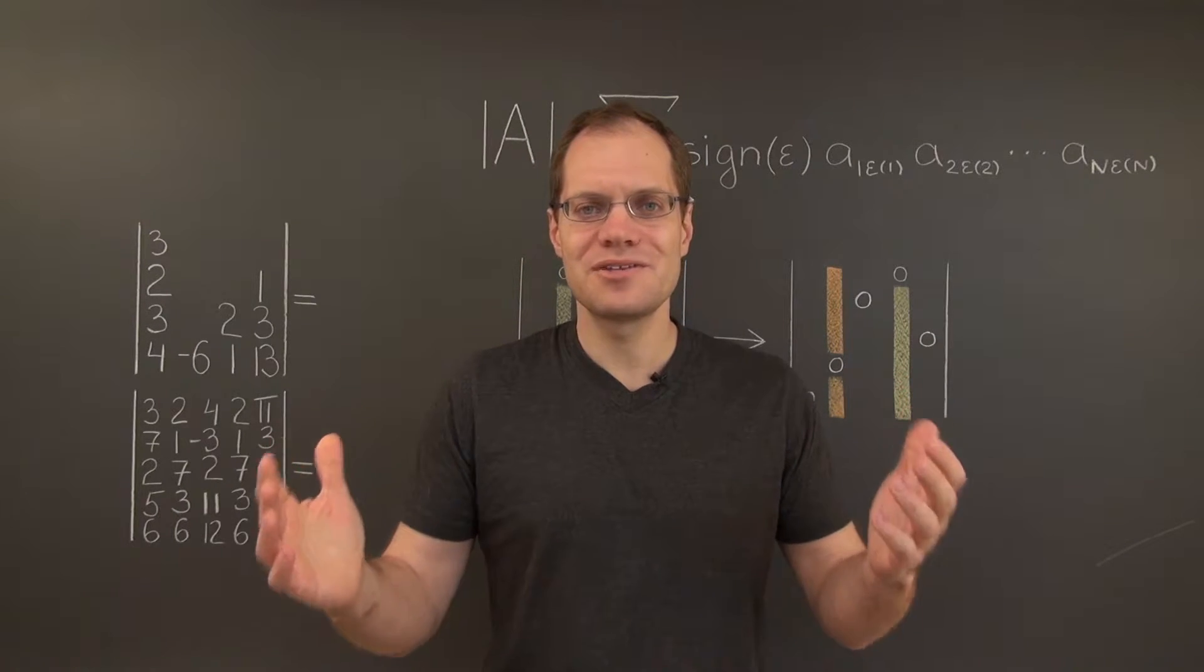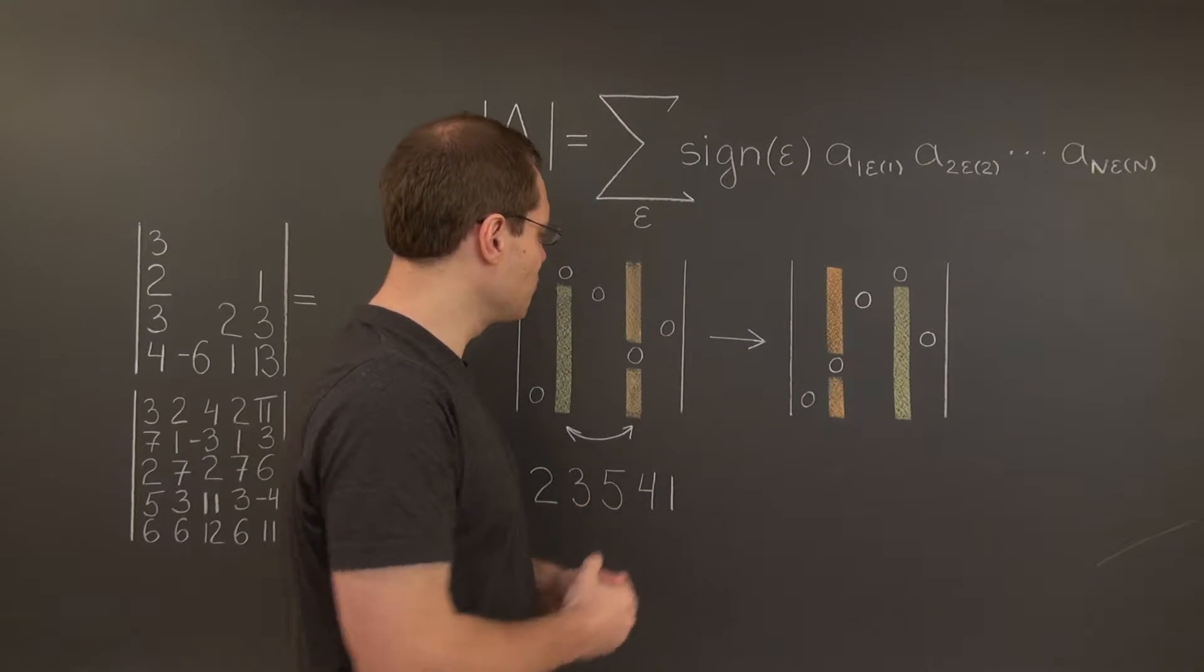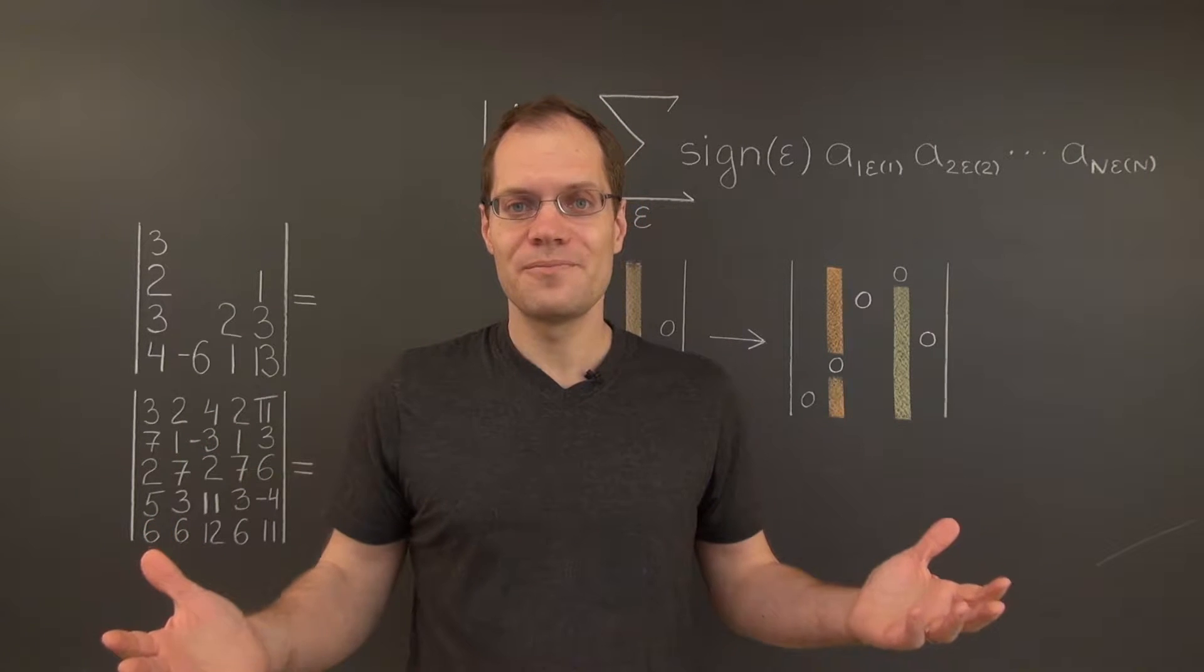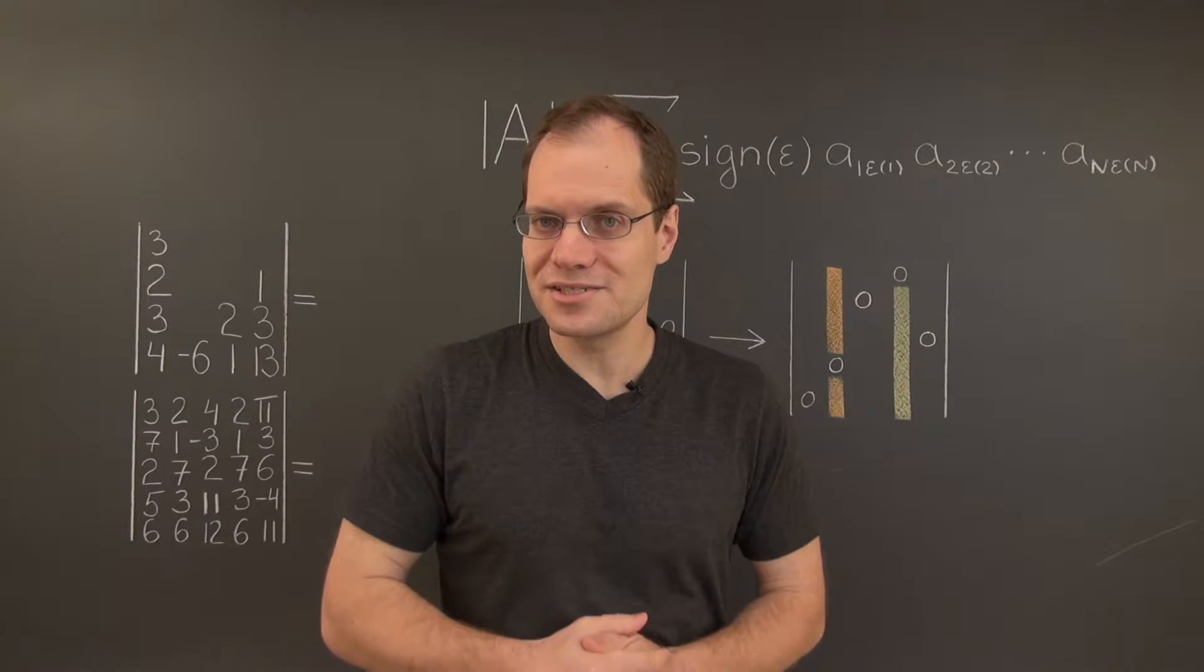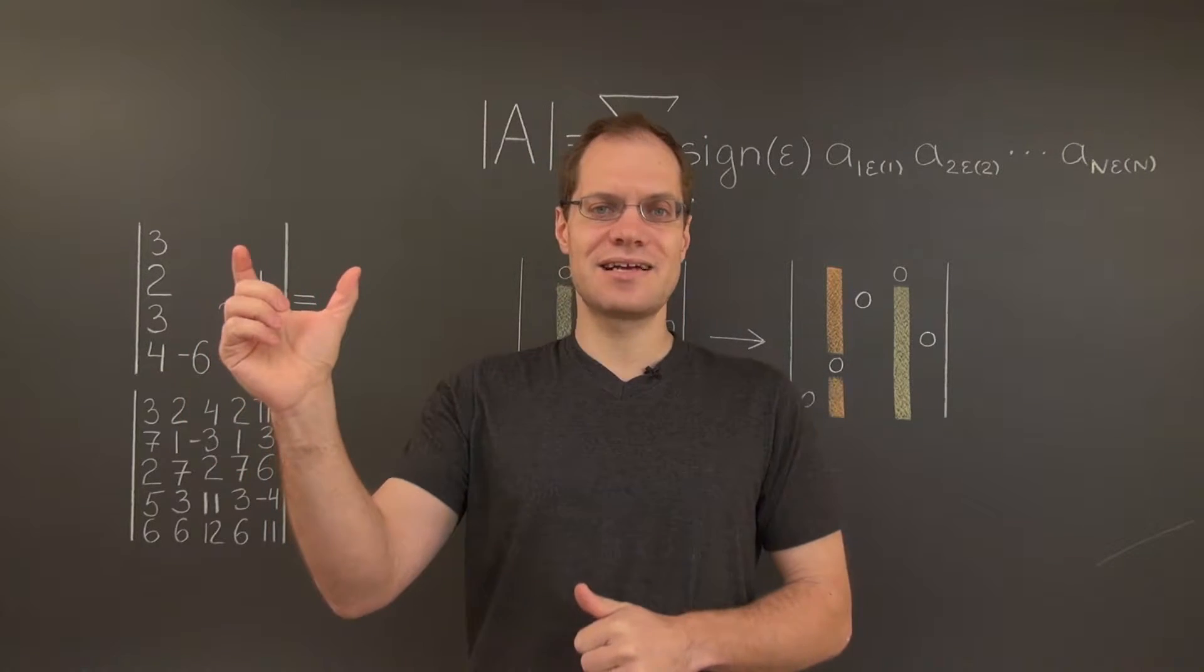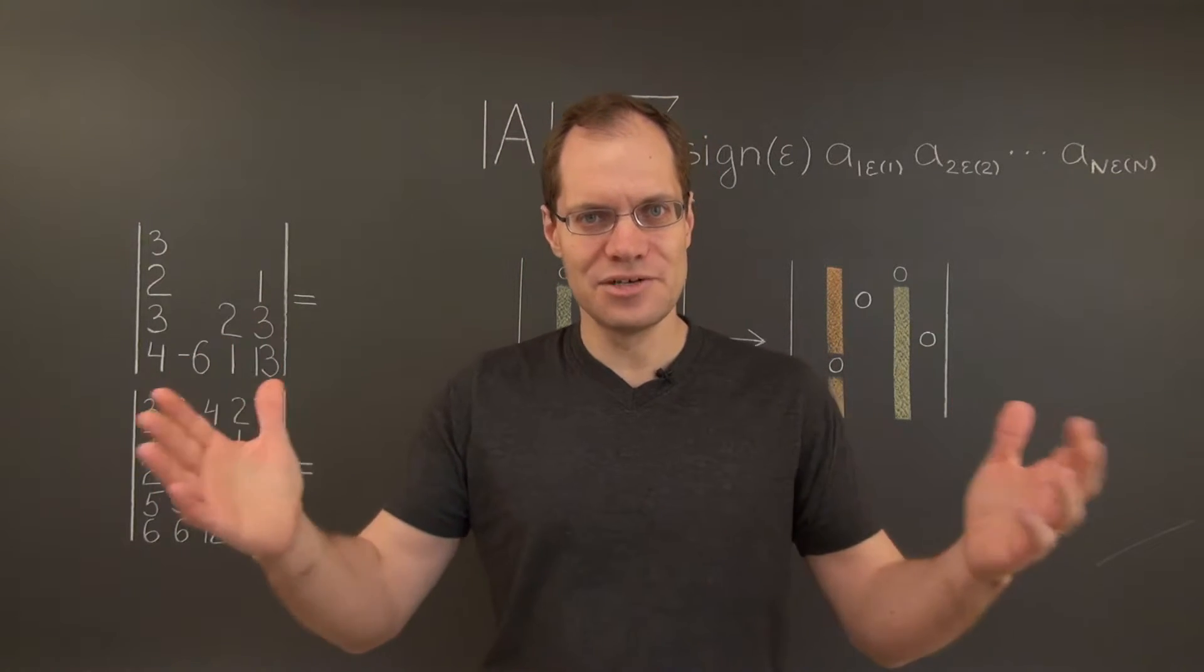And this property is particularly fun to prove, because as you will see, everything will work out just right. Also, as we mentioned before, one of the immediate consequences of this property is the fact that if you have two identical columns or rows in a matrix, the determinant must be zero.